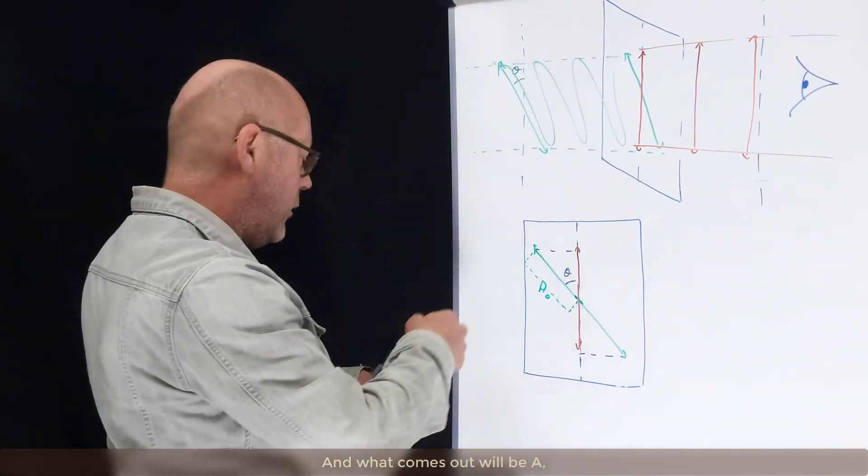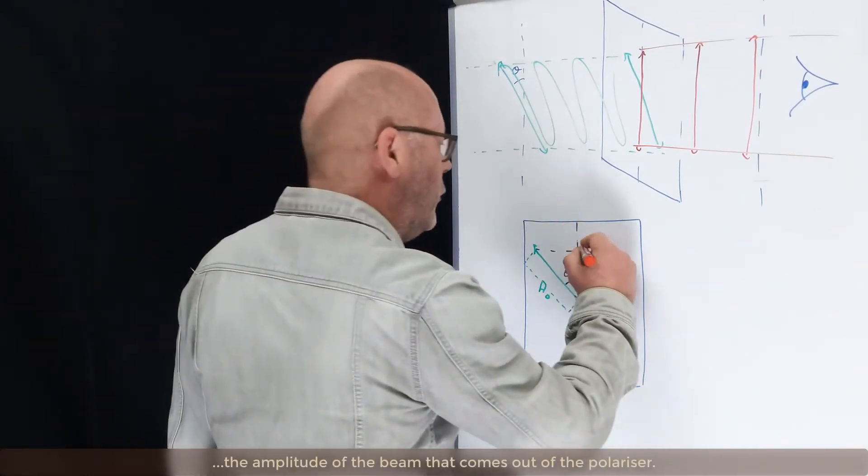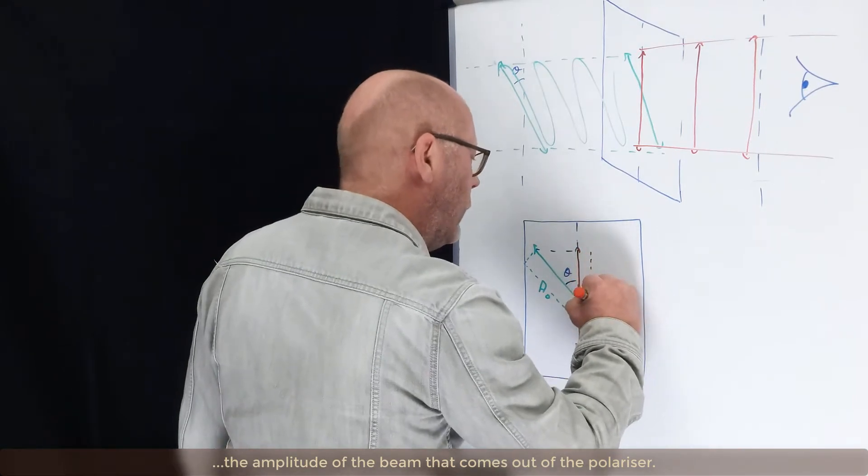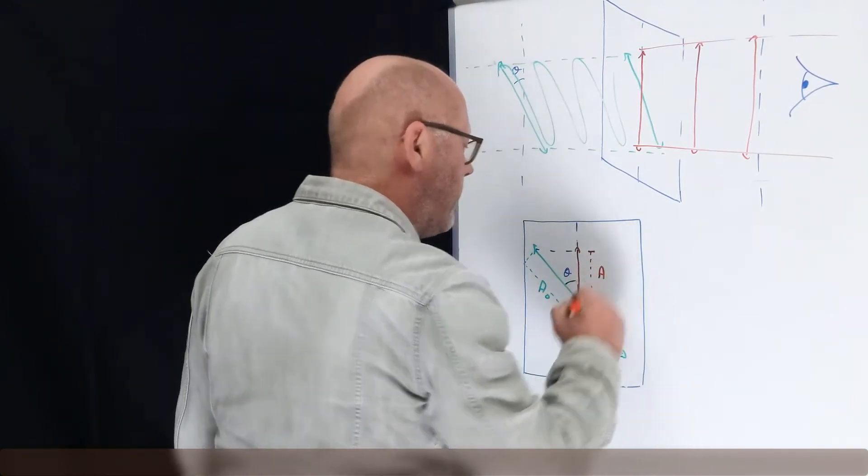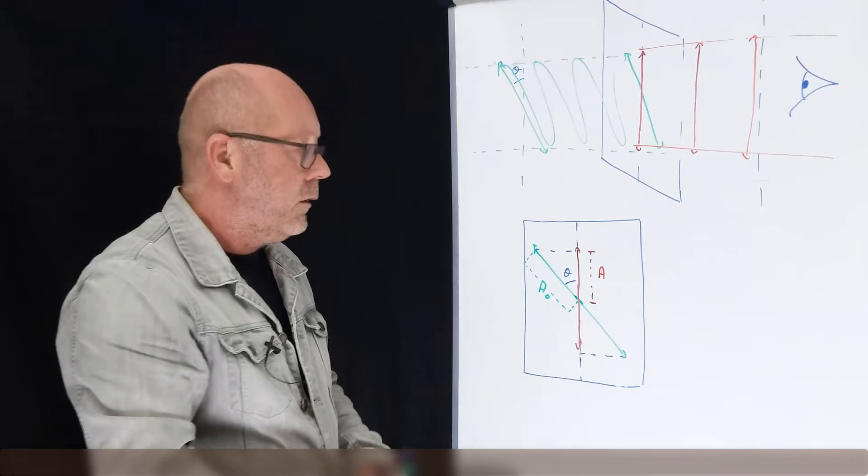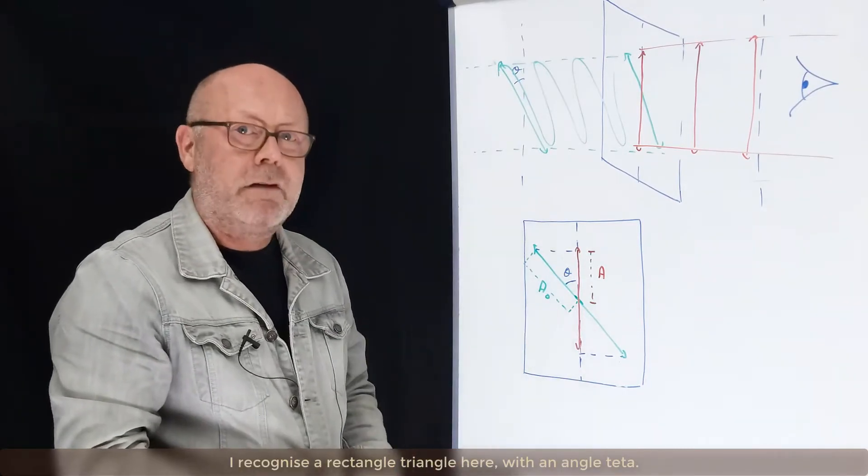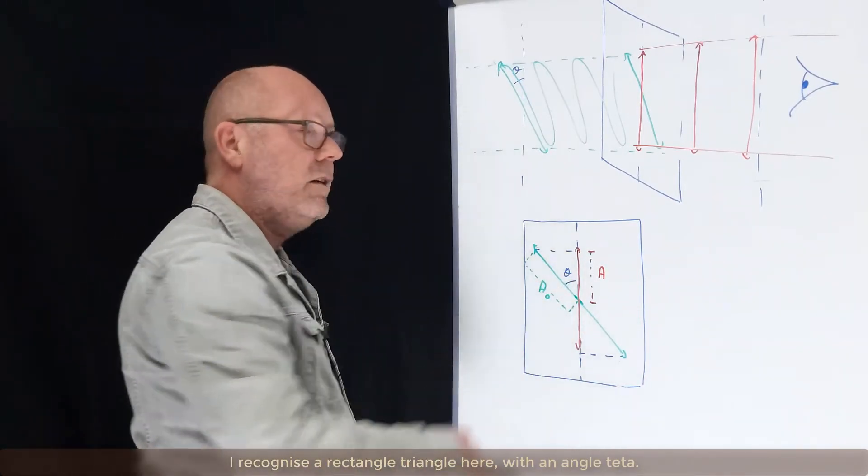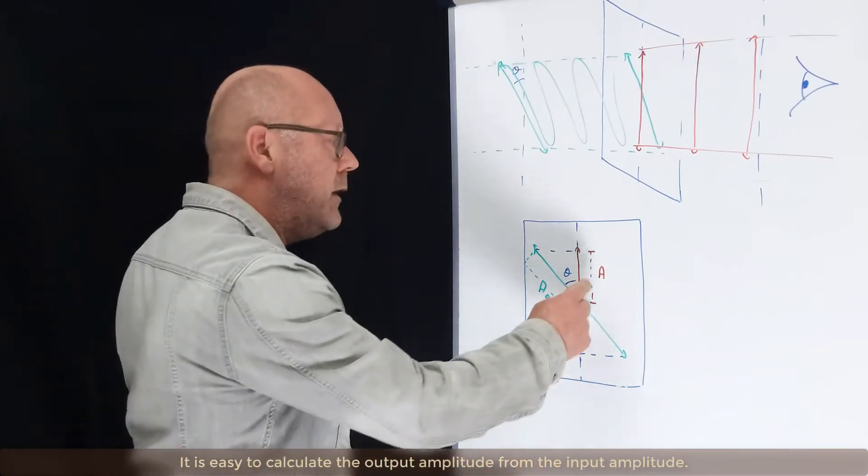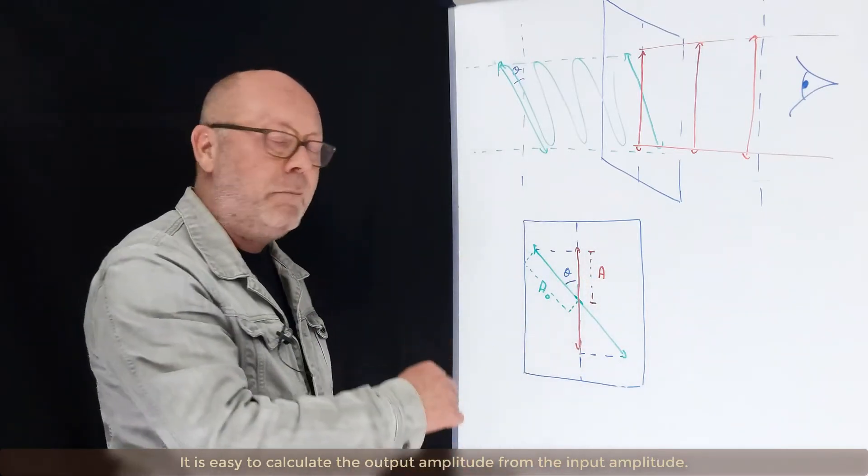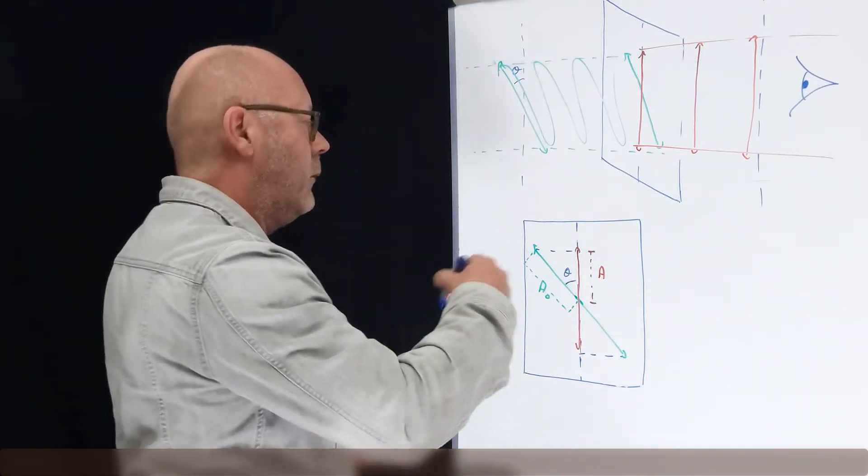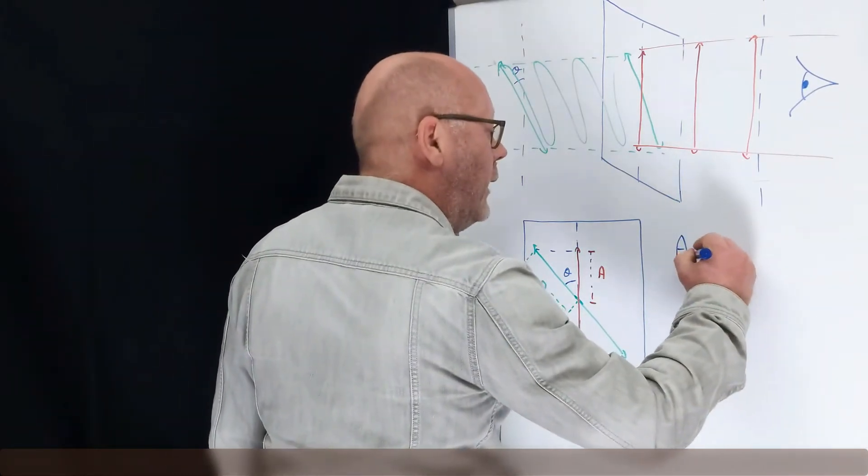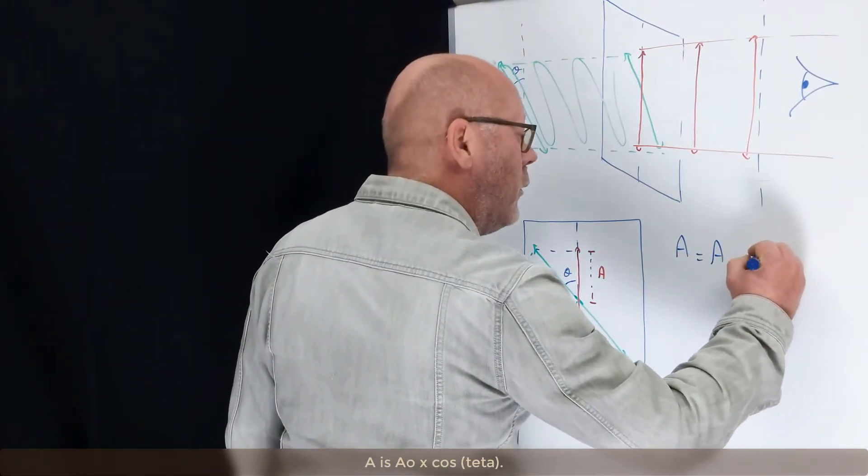And what comes out will be A, the amplitude of the beam that comes out of the polarizer. I recognize a rectangle triangle here with angle θ. So it's easy to calculate the output amplitude from the input amplitude. A is A0 cos θ.